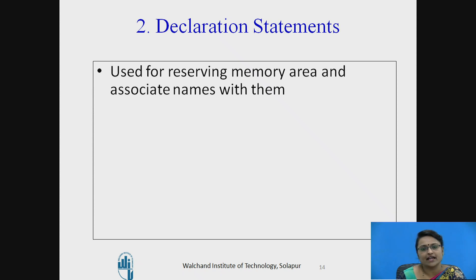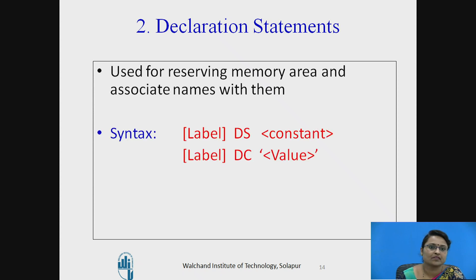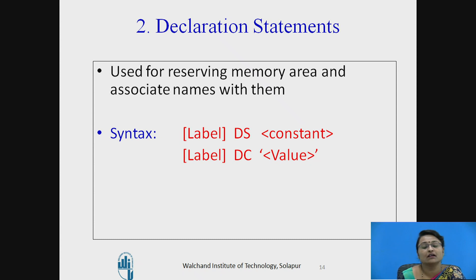The second type is declaration statements, used for declaring memory — reserving a memory area and associating a label or name with it, which we call an identifier or variable. There are basically two statements: DS for declaring storage and DC for declaring a constant.